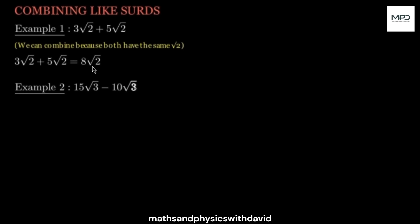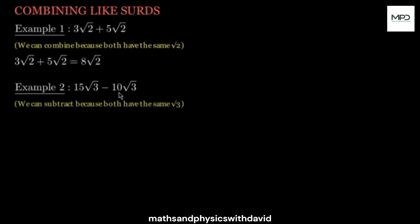Another example. Here we have square root of 3 and square root of 3, which means we can just pick one of these square roots and subtract the coefficients at the back: 15 minus 10. So at the end of the day, we get 5 root 3.